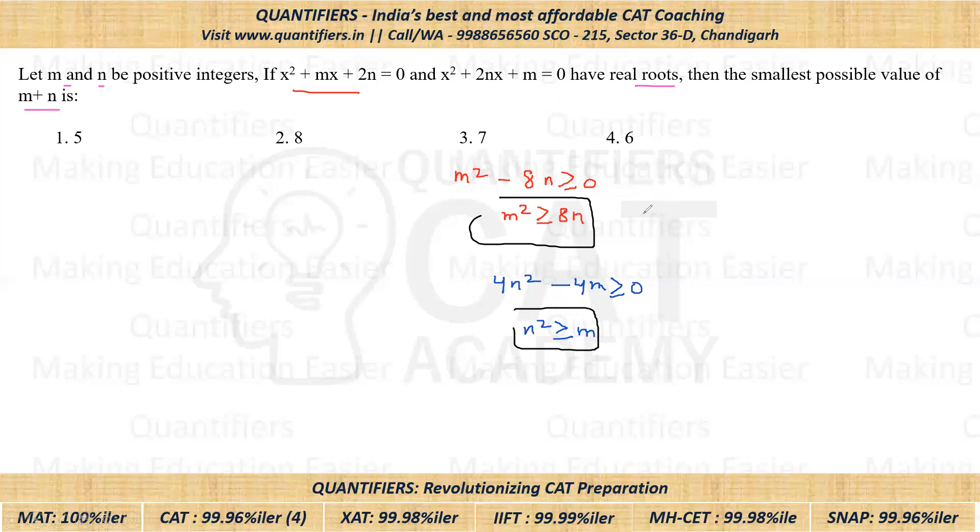Okay, if I put N equals 1, then obviously M², M² will be greater than or equal to 8. Now because M² is greater than or equal to 8, we need the value of M minimum to be 3.